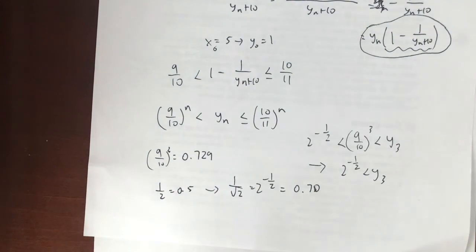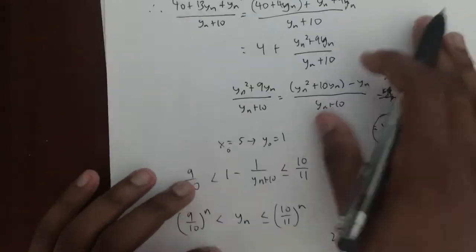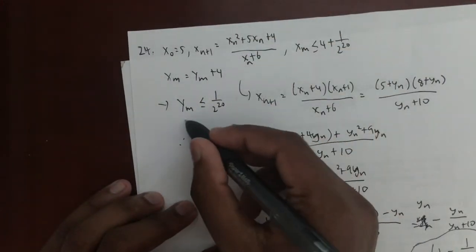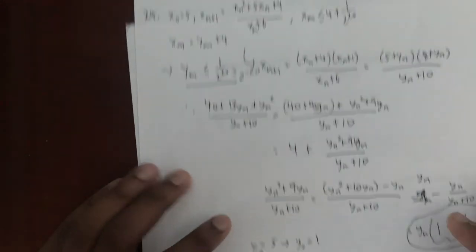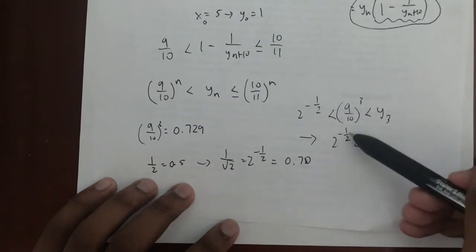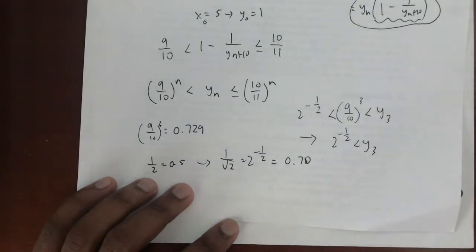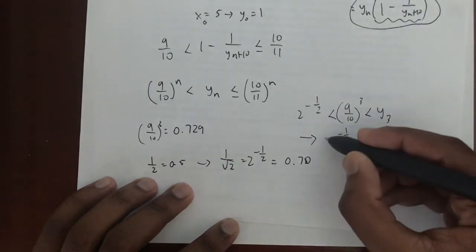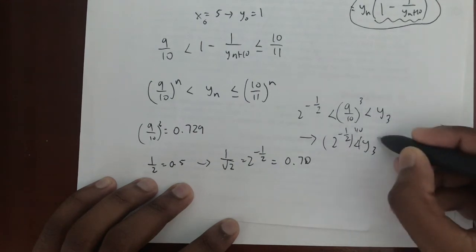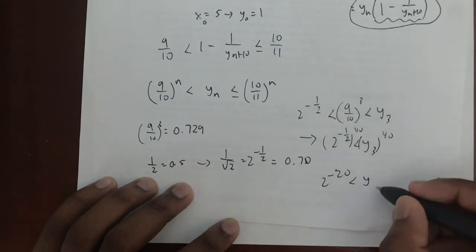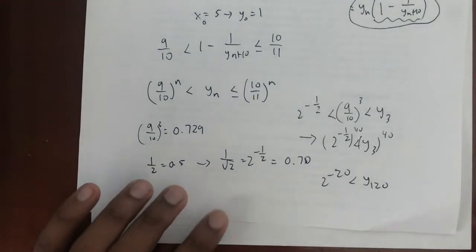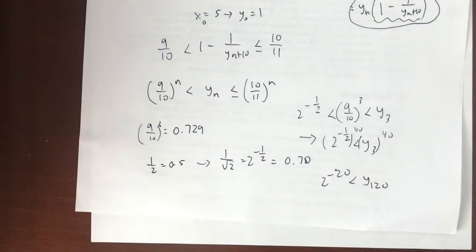And obviously we want to find this, for this expression we have in the beginning, we want to look at this, which is essentially another way of saying 2^(-20). The way I get 2^(-20) from here is to raise both sides to the 40th power. If I raise both sides to the 40th power, I'm going to have 2^(-20) < y_120, because y cubed 40 times is 3 times 40, which is 120. And here's why this is important: because now we've pretty much solved the problem.